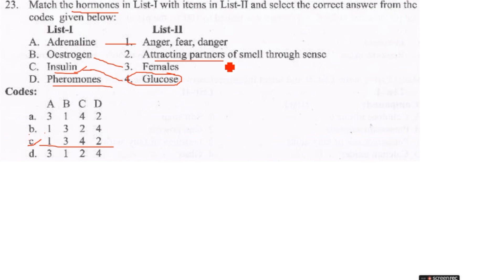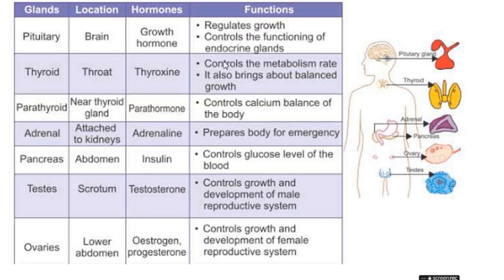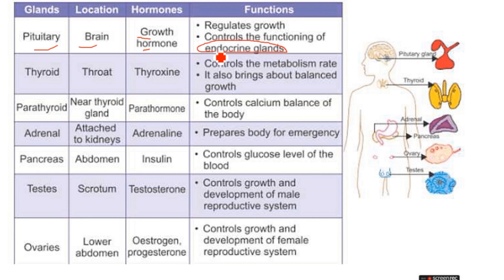Hormones are a very important topic in science and technology. Some important glands: the pituitary gland secretes growth hormone and controls the function of other endocrine glands. Pancreas is located in the abdomen.